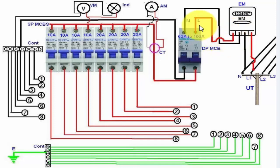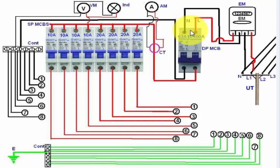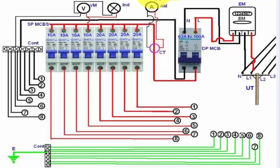In the distribution board we have a double pole MCB circuit breaker which is our main circuit breaker. From here we can switch off or switch on the complete phase supply. The neutral and phase supply is connected to the double pole MCB circuit breaker, and from here the neutral wire goes to the connector from where we can get the connection for each load.